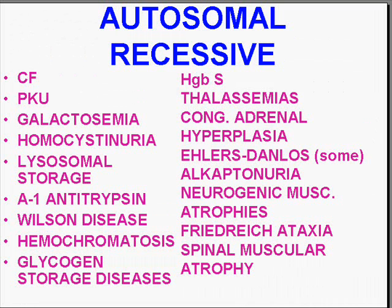You should generally know that all of these are classic genetic diseases. Hemoglobin S needs to be homozygous. The thalassemias, congenital adrenal hyperplasia, some forms of Ehlers-Danlos, alkaptonuria, the neurogenic muscular atrophies, Friedreich's ataxia, spinal muscular atrophy, glycogen storage diseases, hemochromatosis, alpha-1 antitrypsin disease, Wilson disease, lysosomal storage disease, homocystinuria, galactosemias, PKU, and cystic fibrosis are all autosomal recessive diseases.